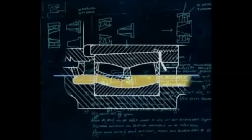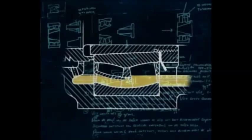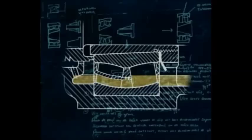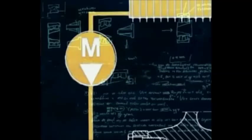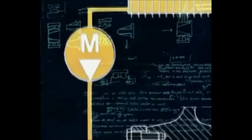In most gearbox applications, the bearings are lubricated by oil splash. On critical machinery, such as very large gearboxes or the drying sections of paper-making machines, heat and contamination can be a problem. In such applications, a recirculatory system is used: oil is fed by pump to the bearings, then allowed to drain back to a sump, where it can be cooled and filtered before reuse.